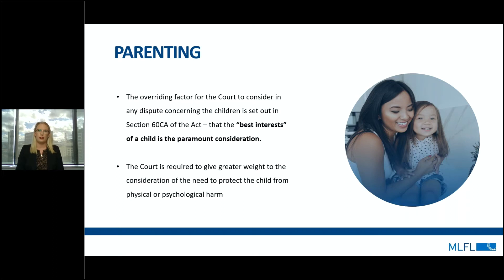In determining a child's best interests, the court must consider the primary and additional considerations set out in Section 60CA of the Act. The primary considerations are: firstly, the benefit to the child of having a meaningful relationship with both of the child's parents; and secondly, the need to protect the child from physical or psychological harm from being subjected to or exposed to abuse, neglect or family violence. In applying these primary considerations, the court is required to give greater weight to the consideration of the need to protect the child from physical and psychological harm. I encourage you all to look up the additional considerations contained in Section 60CA of the Act.